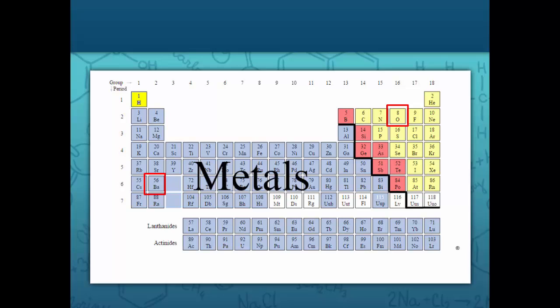When a metal and a nonmetal form a bond, the valence electrons from the metal are transferred to the nonmetal, making the metal a positive ion or cation, and the nonmetal a negative ion or anion.